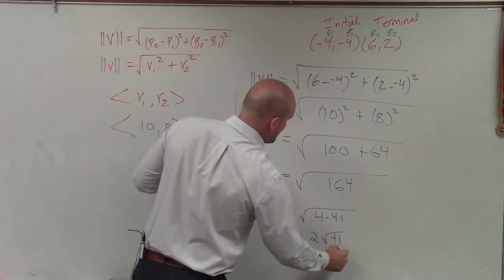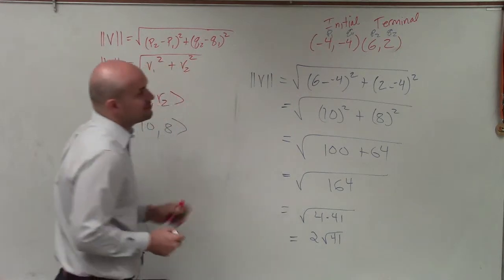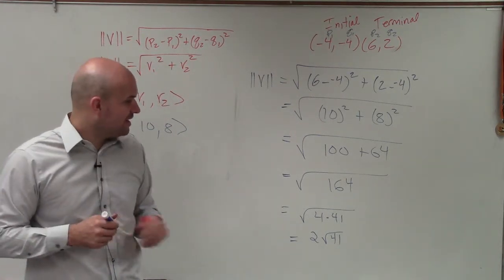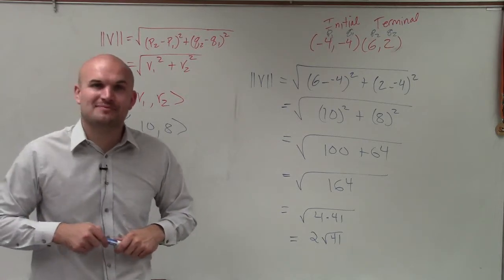So my final answer is 2 square root of 41 as the magnitude of the vector. There you go, ladies and gentlemen. That is how you've determined the magnitude of a vector. Thanks.